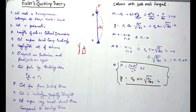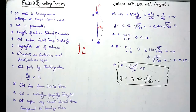The theory has certain limitations, which is why these assumptions are made. The seventh assumption is that the column fails by buckling alone — not because of material failure. Buckling is a geometrical instability, not a crushing failure.